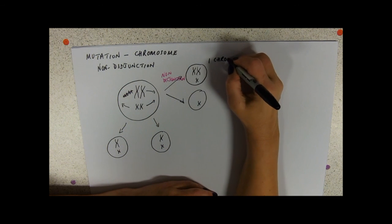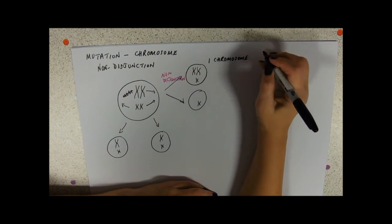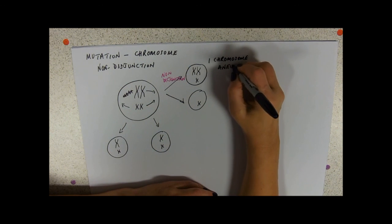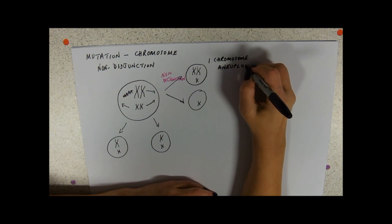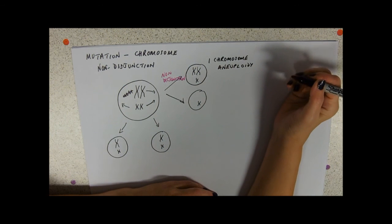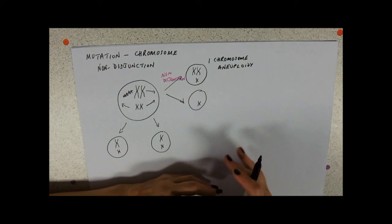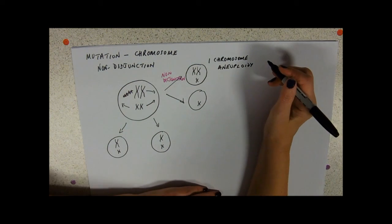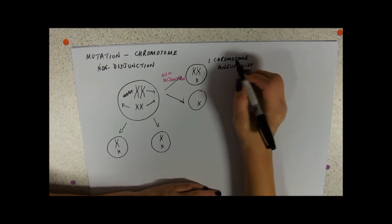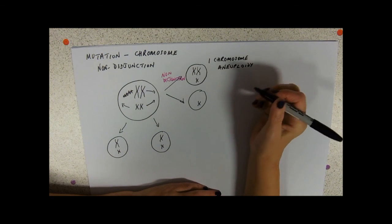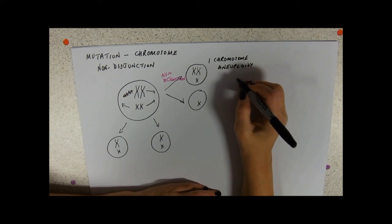When there's only one chromosome involved, we call it aneuploidy. Plants often do polyploidy where they end up with triploid cells or quadruploid cells. But in humans we're just dealing with one example which is aneuploidy - one chromosome.